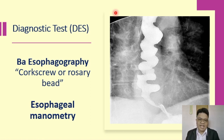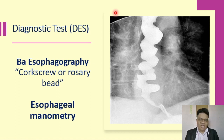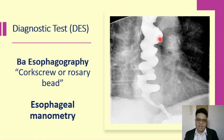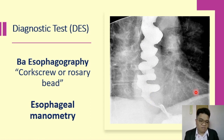For the diagnostic test for DES, the test is barium swallow — also referred to as barium esophagography, since we are visualizing the esophagus. The appearance looks like a corkscrew, or sometimes referred to as rosary bead appearance, which is classic for diffuse esophageal spasm. As you can see, there are involuntary movements and contractions preventing the esophagus from being straightened — results of the spasms. Esophageal manometry is also used.